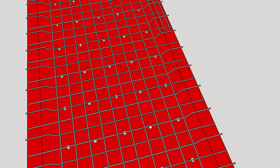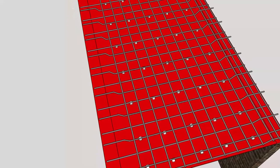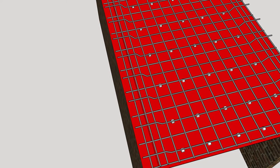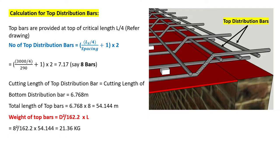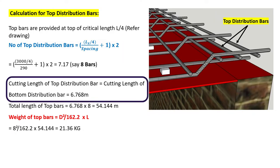Now the calculation for top distribution bars. These bars are provided at the top over a critical length, usually taken as L/4 where L is the shorter span. The number of top distribution bars is given by: (Lx/4) / spacing + 1, multiplied by 2. Lx is 3000 mm and spacing is 290 mm, giving 7.17, say 8 bars. Their cutting length equals the cutting length of the bottom distribution bars, already calculated as 6.768 meters.